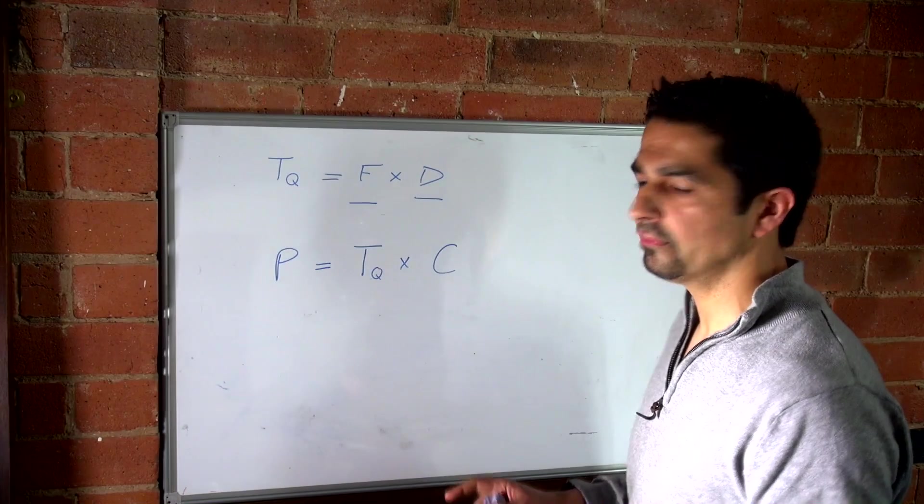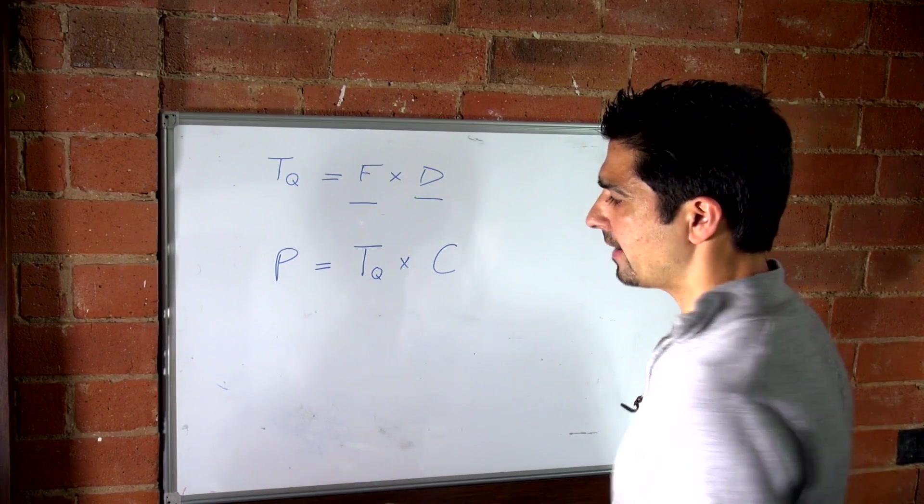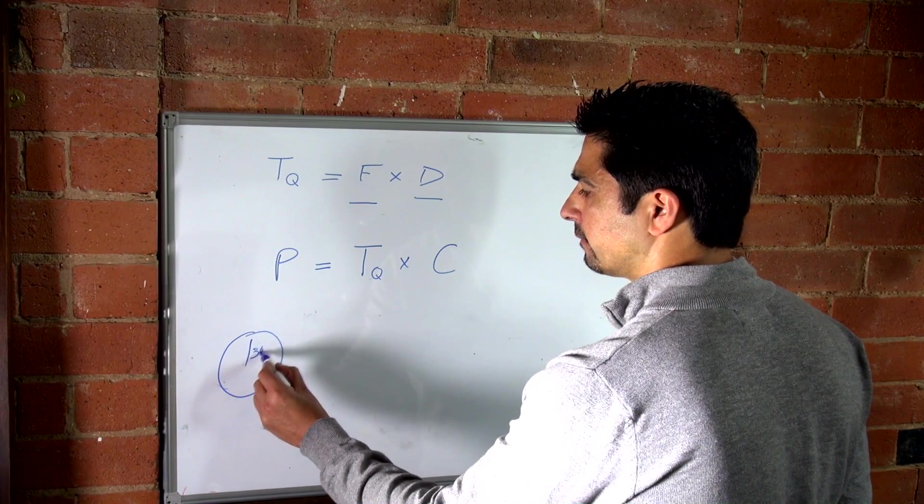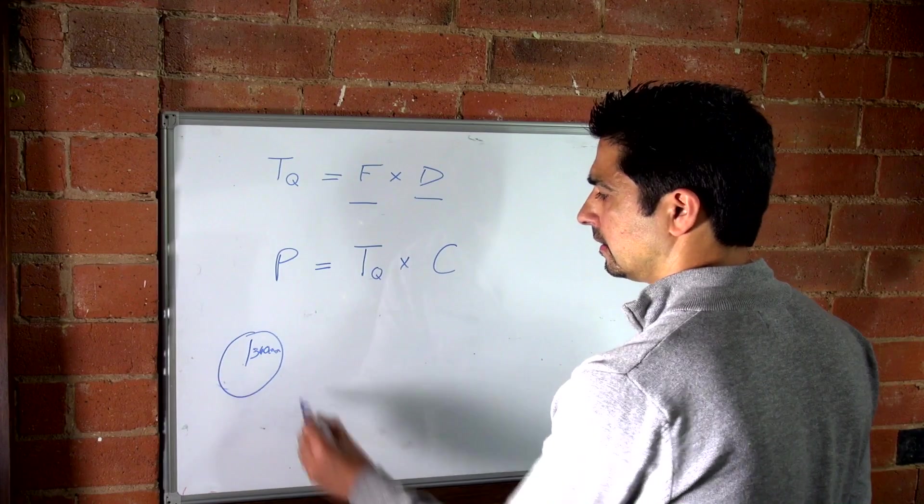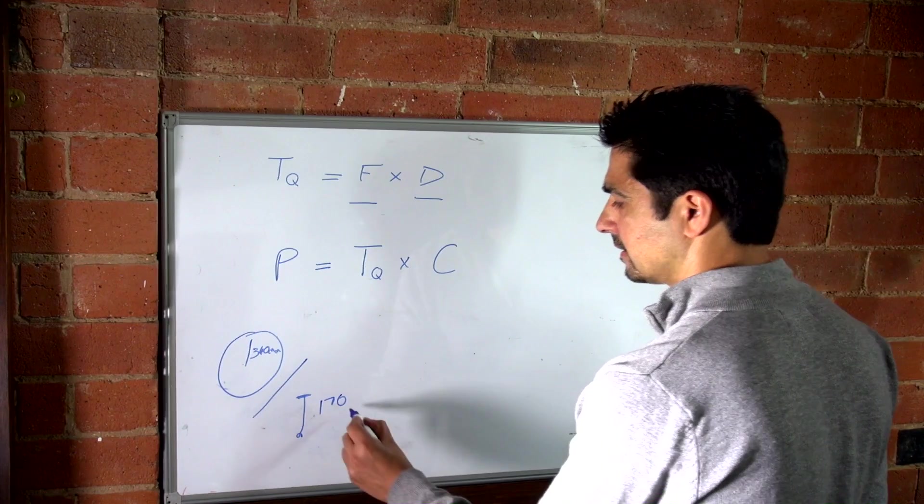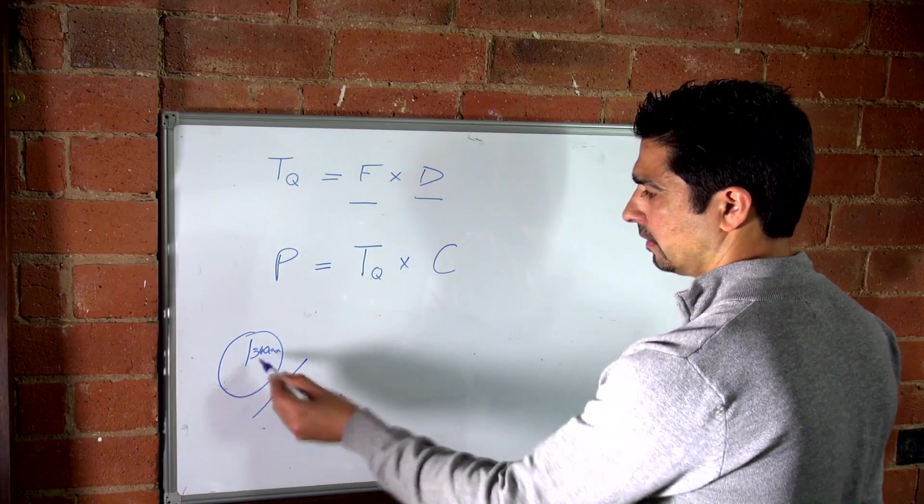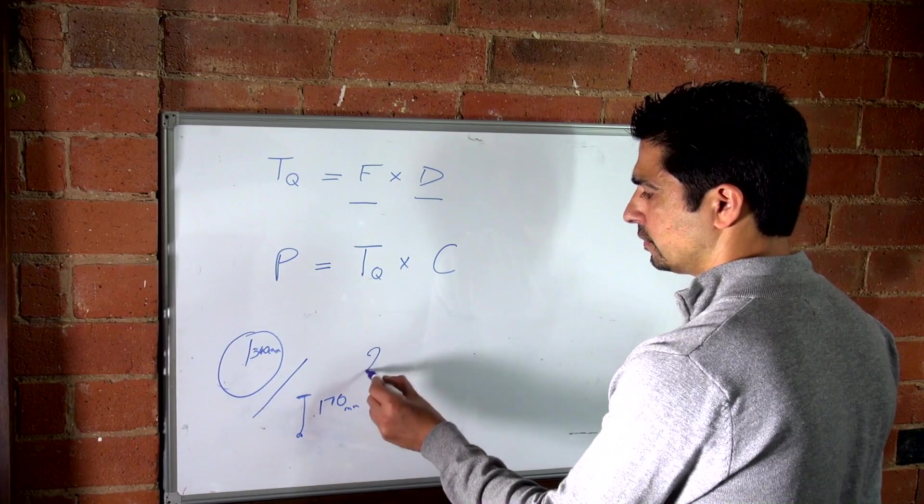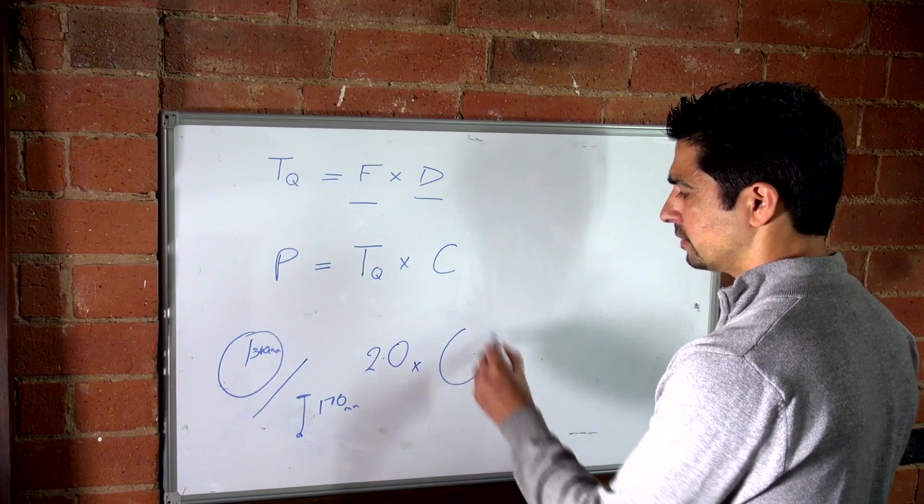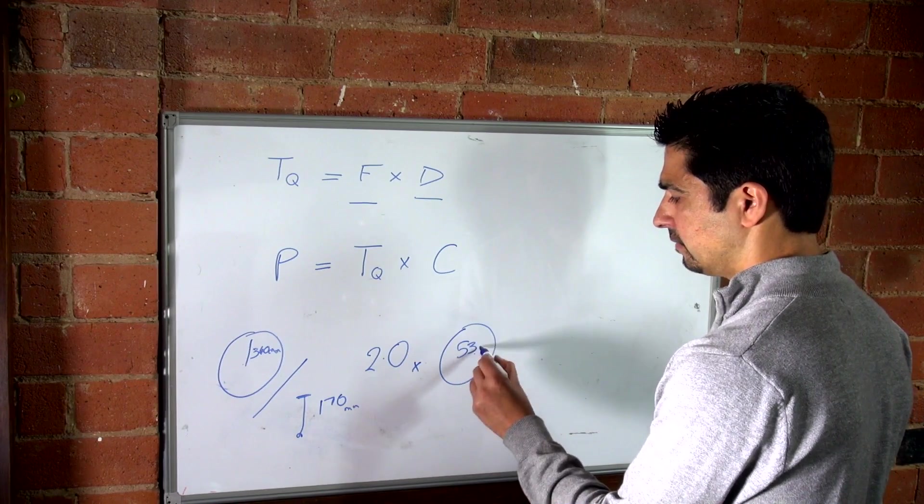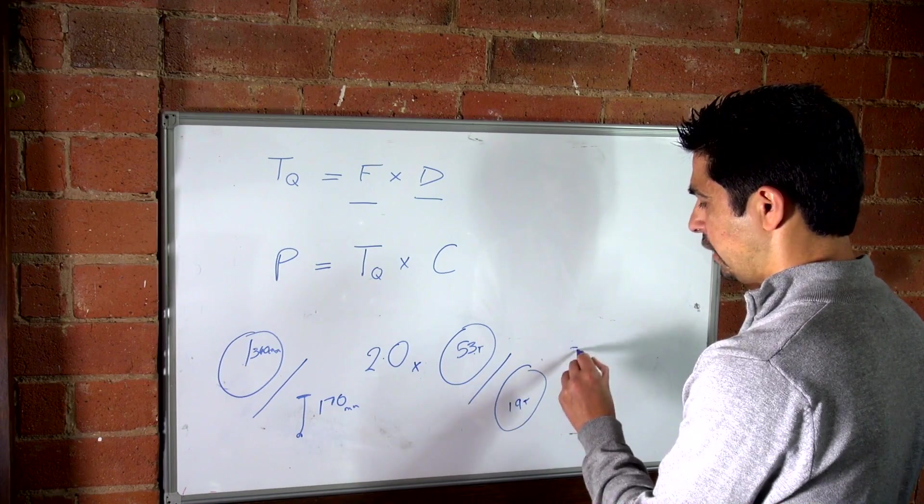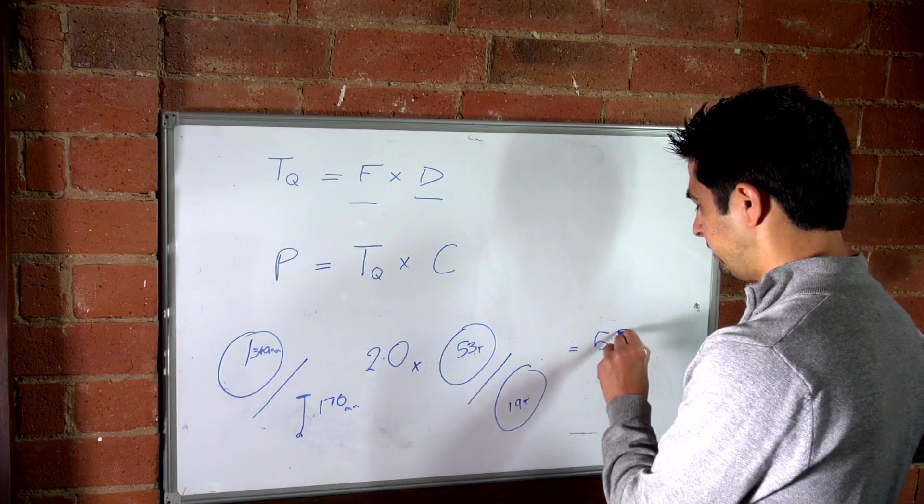Okay, can we put some numbers on this question of crank length and gear ratio? Yes, we can. If we take a typical wheel of 700cc, the radius is actually around 340mm. Divide that by your crank length of, let's take the 170 for convenience, then you've got a nice round figure of a ratio of the 2 of 2.0. Times that by your front chainring, let's say you're in a 53. Divide it by your cassette, let's say you're in a 19. And you get an overall final gear ratio of 5.5.